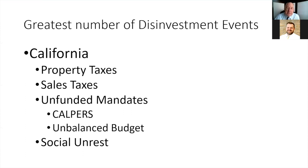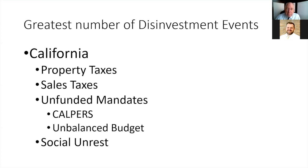Where are disinvestment events happening most? California is number one - more disinvestment events per capita than anywhere else. Chicago and New York are also seriously impacted. Demographers put a score out there that they'll never tell you about that deals with that. California is going to have a property tax increase that will make almost everything happening in Illinois look minor. Proposition 8 from the 1970s, which stopped huge property tax increases, has been overturned.